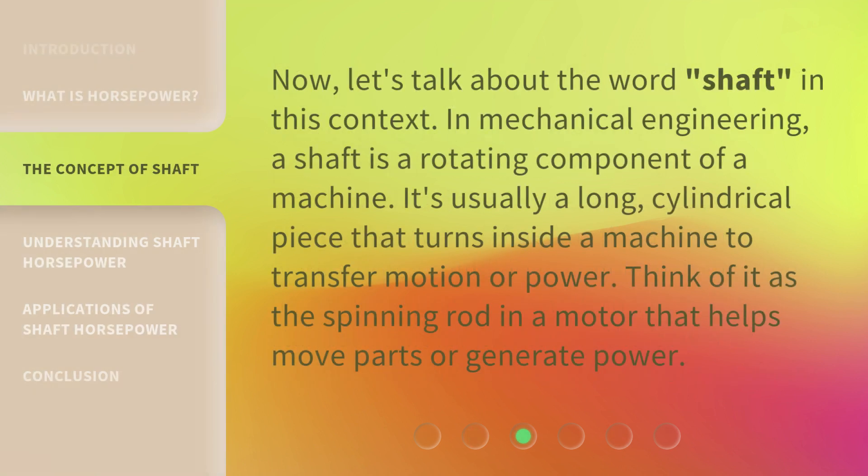Now, let's talk about the word shaft in this context. In mechanical engineering, a shaft is a rotating component of a machine. It's usually a long, cylindrical piece that turns inside a machine to transfer motion or power. Think of it as the spinning rod in a motor that helps move parts or generate power.